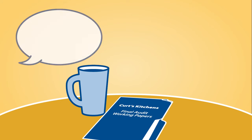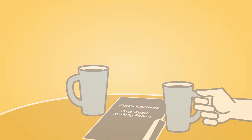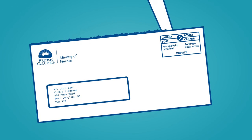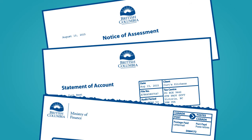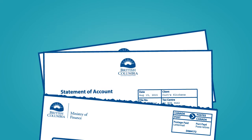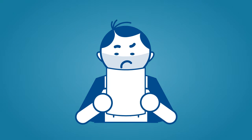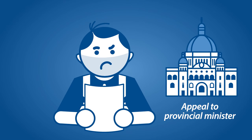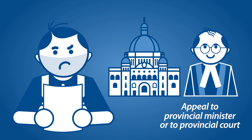Curt will also receive a letter explaining the reasons for any taxes due. He'll receive a notice of assessment and a statement of account showing how much tax to pay and when it's due. If Curt doesn't agree with the notice of assessment, he can appeal the decision directly to the minister. If he's still dissatisfied, Curt can appeal to the courts. It's important to know the law imposes time limits on appeal submissions.